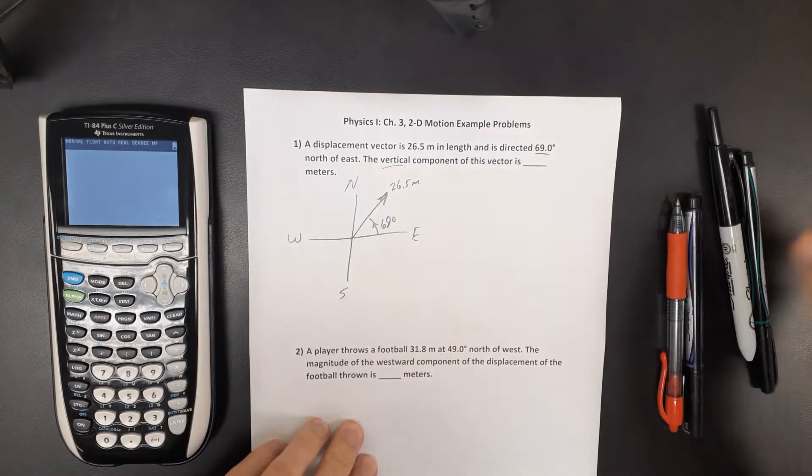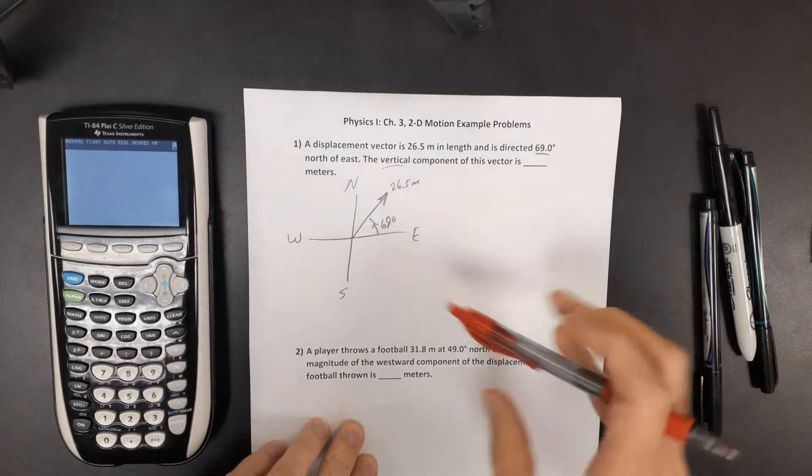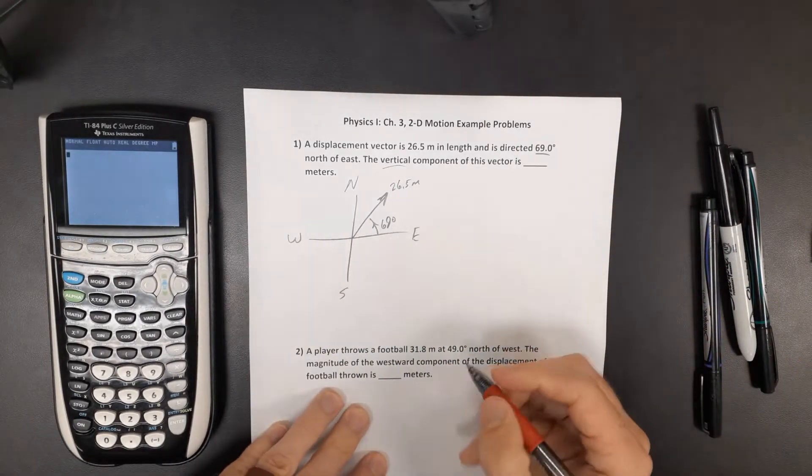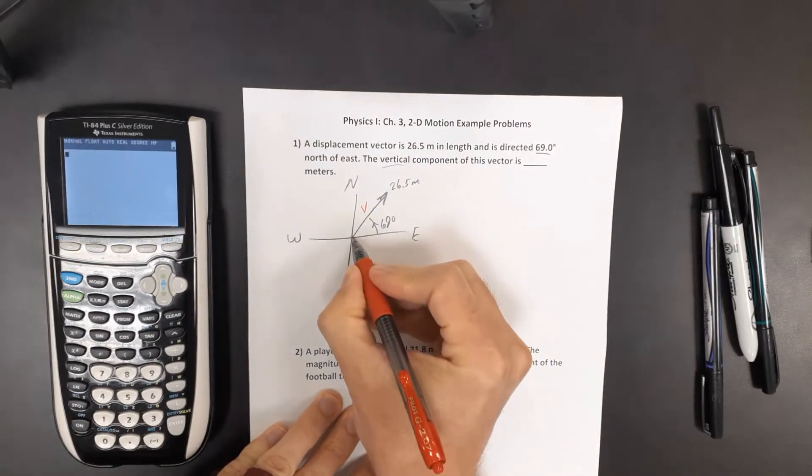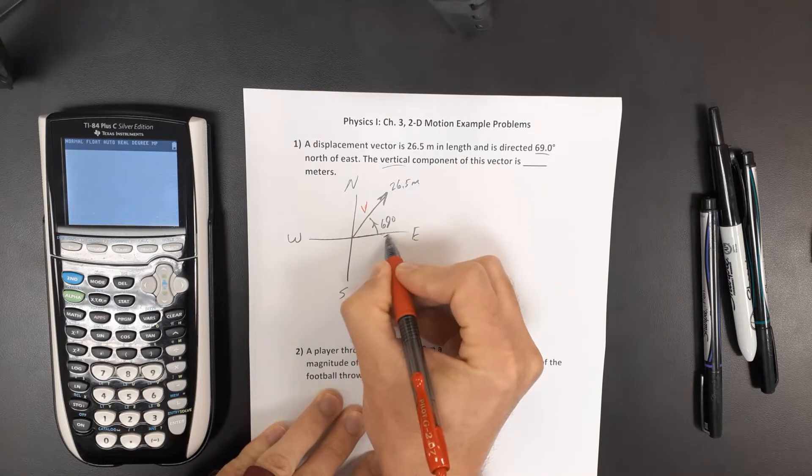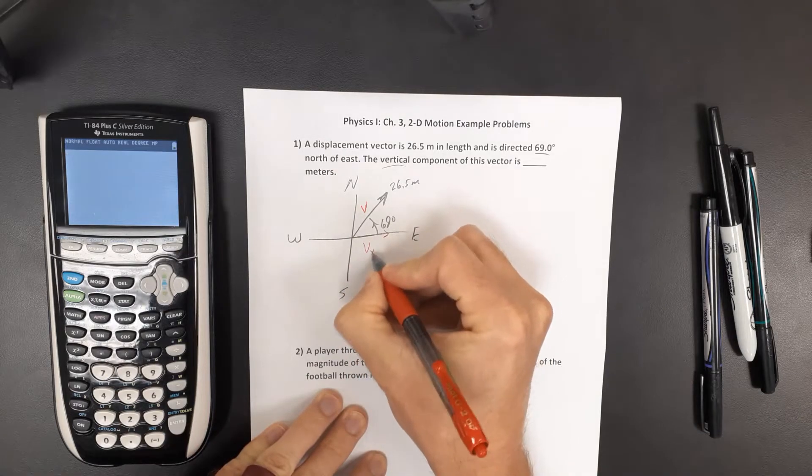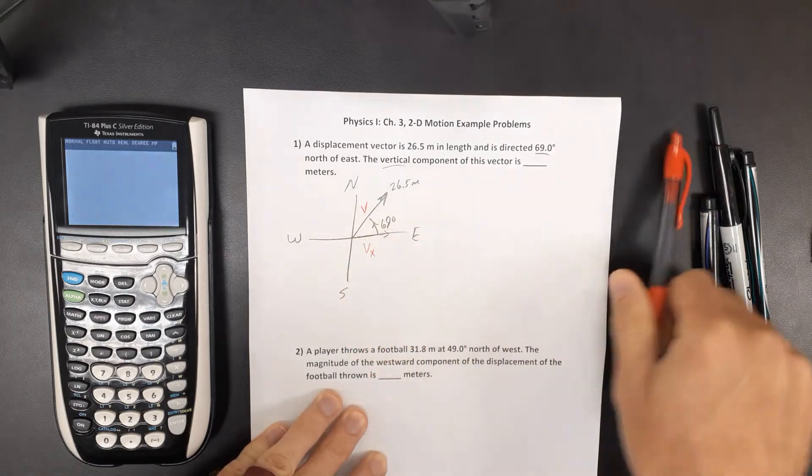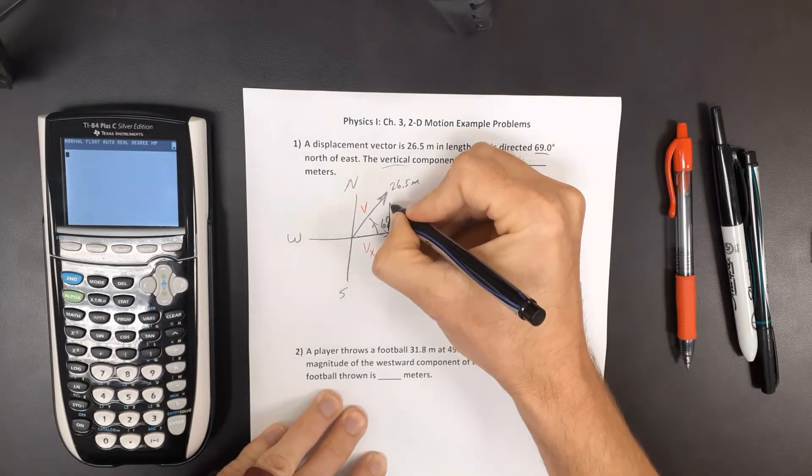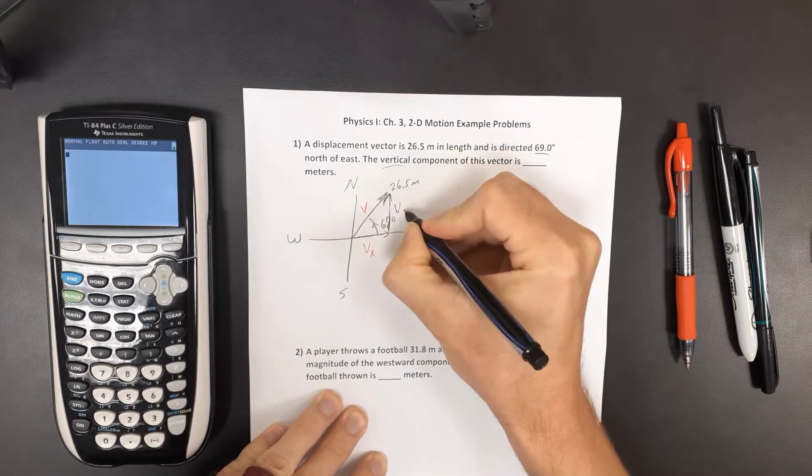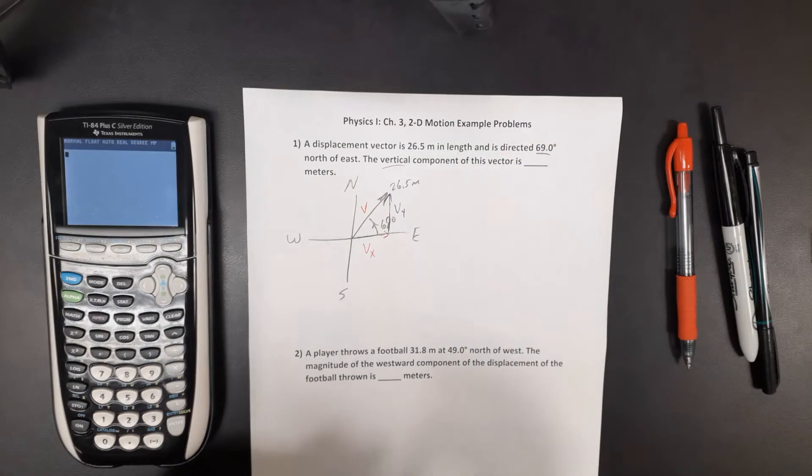And we want to find the vertical component. Well every vector is going to have two components. If this is our vector right here, it's going to have an x component down here across the x axis or the horizontal component.